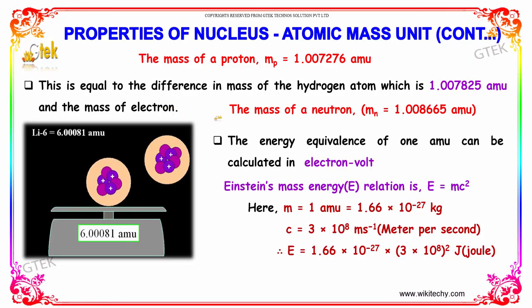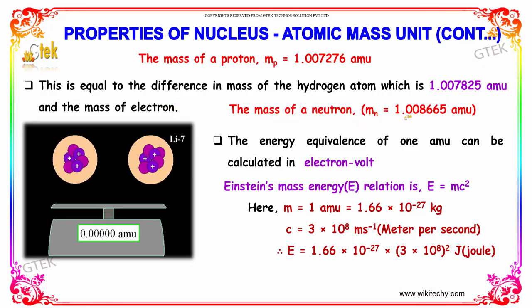Finally, the mass of the neutron is given by mn is equal to 1.008665 amu.